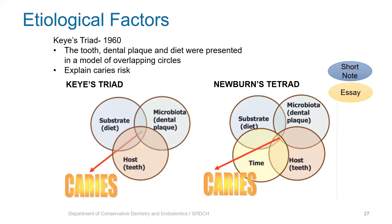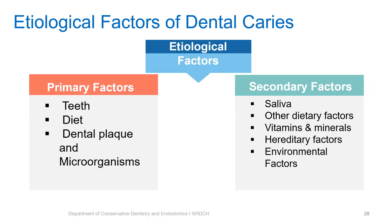This time factor was added by Newbrun, and it later came to be known as Newbrun's tetrad. The etiological factors of dental caries can be classified into primary factors and secondary factors. The primary factors are the teeth, the diet, dental plaque and microorganisms. Secondary factors are saliva, other dietary factors, vitamins and mineral intake, hereditary factors, and other environmental factors.